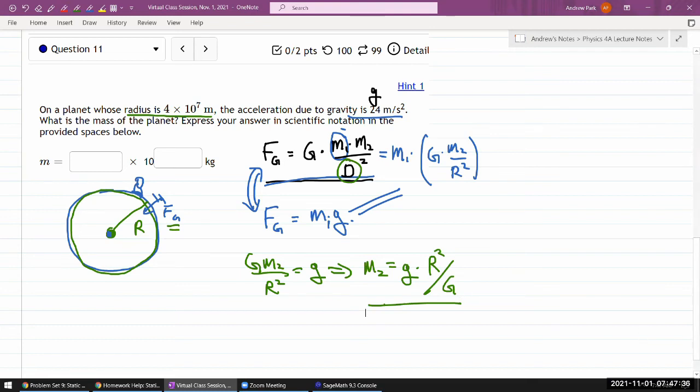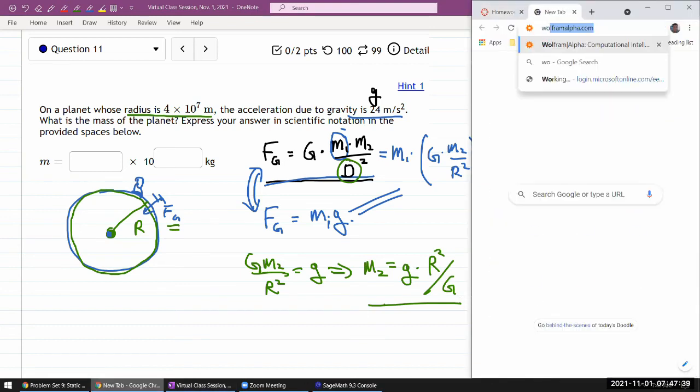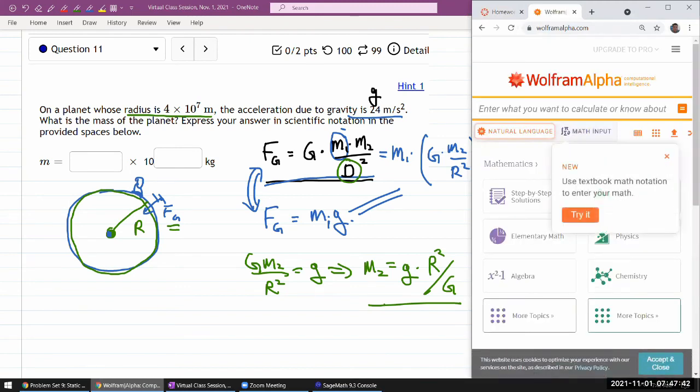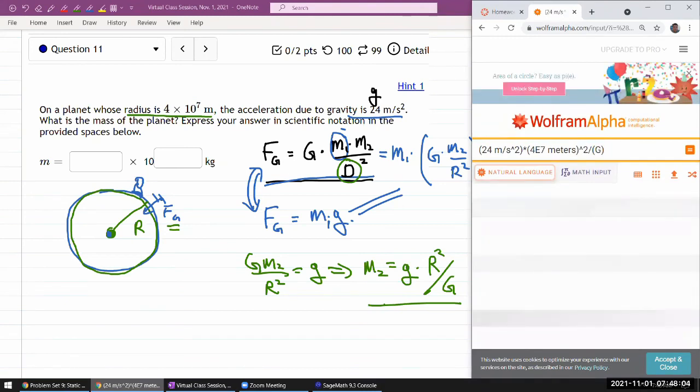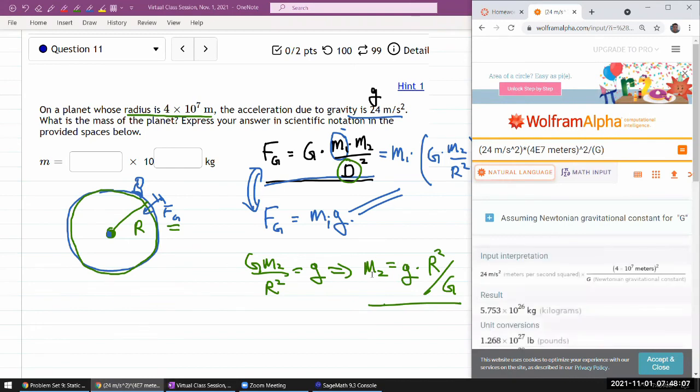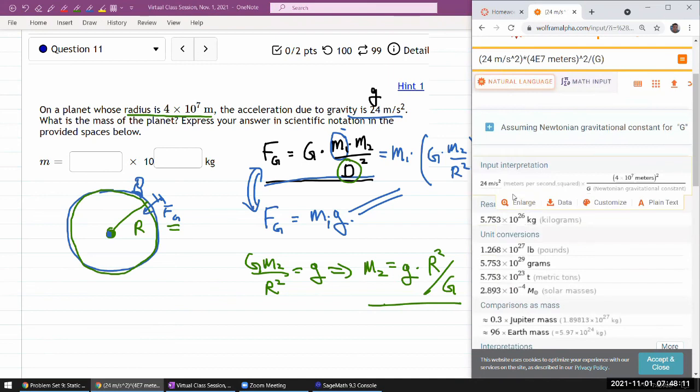Let me plug in the numbers and I'm going to use Wolfram Alpha so I don't have to look up what G is. So 24 meters per second squared times the radius of 4 times 10 to the 7 meters squared divided by the Newtonian gravitational constant. Yeah, I get an answer here: 5.75 times 10 to the power of 26 kilograms. Let me plug that in.